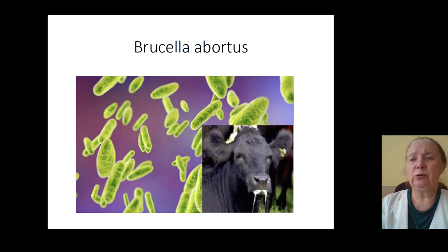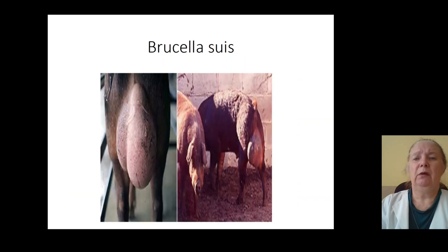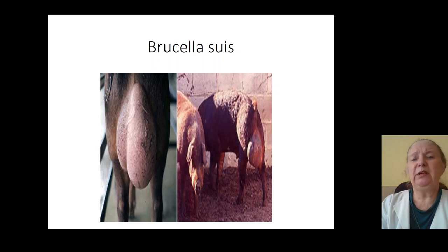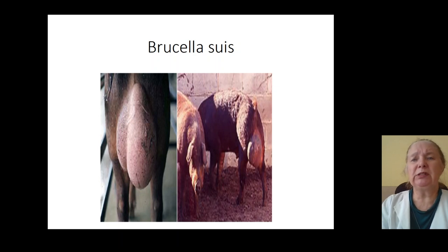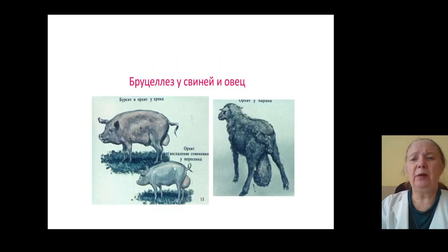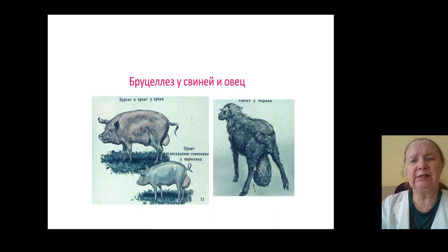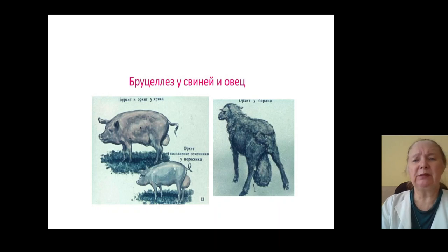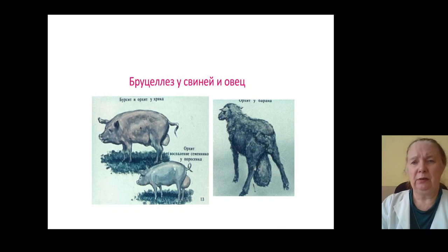Brucella abortus sources of infection are cows, lambs, and pigs. Pigs are infected by Brucella suis. Lambs are infected by Brucella melitensis or Brucella ovis. In cases of brucellosis in pigs and lambs, we see formation of arthritis in animals.